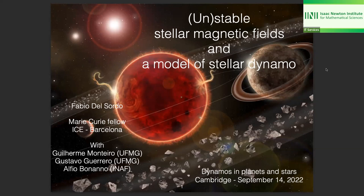The talk is divided into two parts. The first part is about a stability problem designed to study the stability of magnetic fields in stars, but possibly applicable also to planets. The second part is a simple analytical model of stellar dynamos. This work was done with Guillermo Monteiro and Gustavo Guerrero from Universidade Federal de Minas Gerais in Belo Horizonte, Brazil, and Alfio Bonanno in Catania, Italy.